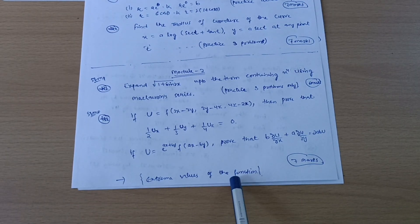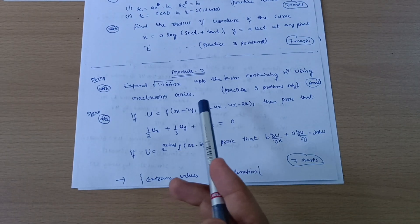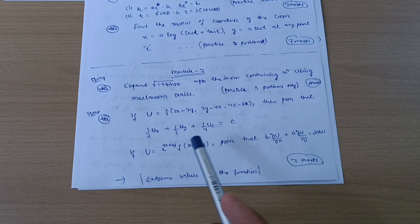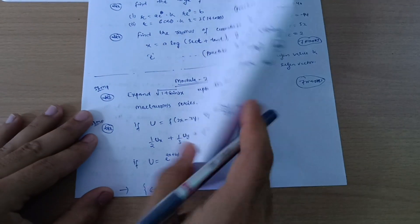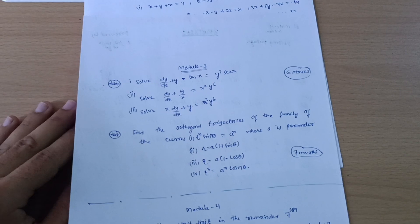It carries seven marks. So McLaren series is for six marks and this question derivation is for seven marks. Go through it.